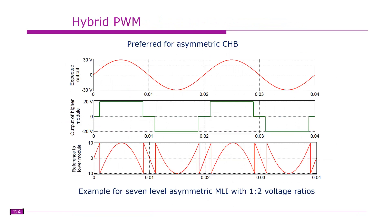Next we have another method known as hybrid PWM, which is especially used for asymmetrical cascade H-bridge inverters. In a previous class when we discussed cascade H-bridge inverters, we discussed that an asymmetrical ratio of DC sources will increase the number of levels. So now we will see how to implement PWM techniques for asymmetrical inverters.